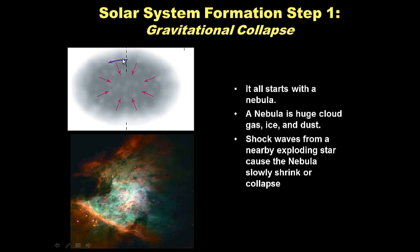Solar system formation step one: gravitational collapse. Gravity is the mutual attraction between all matter. It all starts with the nebula — a huge cloud of gas, ice, and dust. Shockwaves from a nearby exploding star cause this nebula to slowly shrink and collapse, and gravity takes over from there. It starts with a trigger like an exploding nearby star, and gravity causes this cloud to shrink.